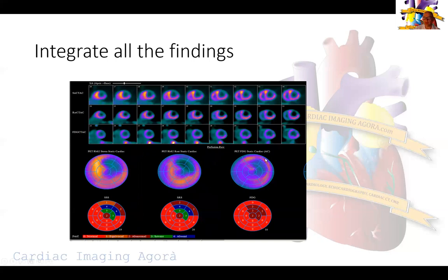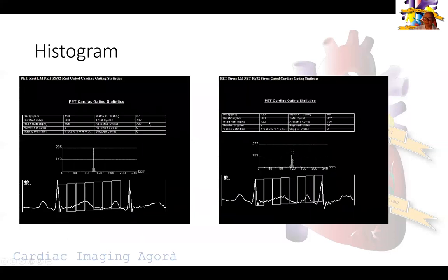We put everything together on a polar map — this is what our physicians see in the electronic medical record when they open the report. They can visualize the inferolateral defect, its extent and severity. It gives a visual impression that is easier to grasp than text alone.